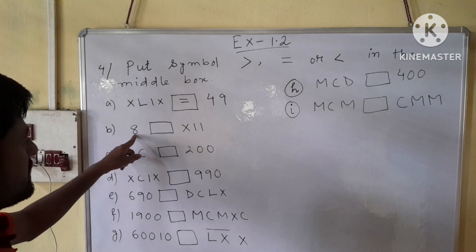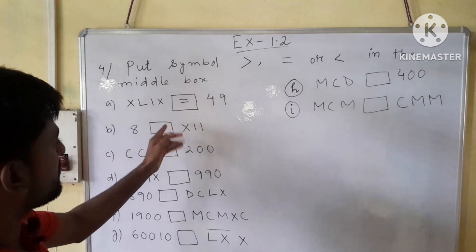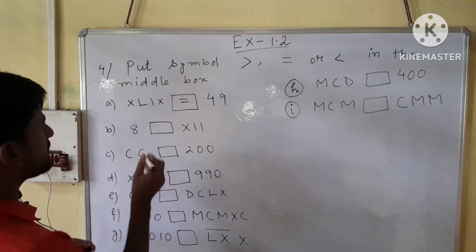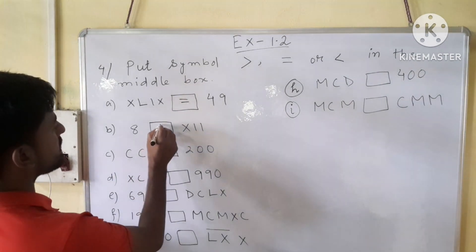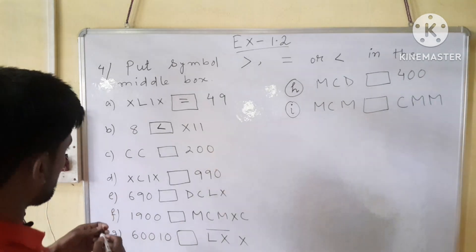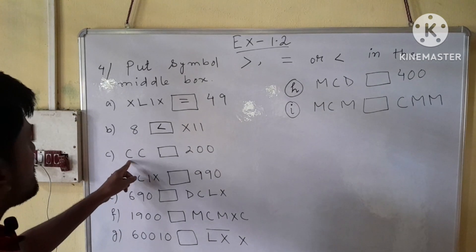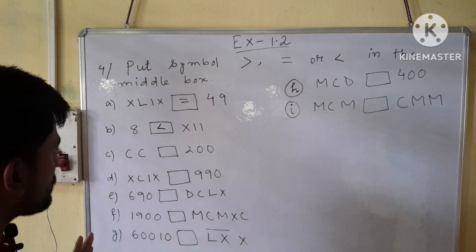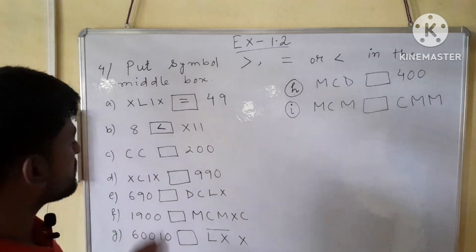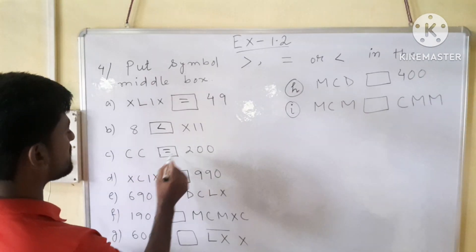Number B: here we have 8, and on the right side of the box we have 12. So it will be less than. Number C: CC means 200, and on the right side of the box we also have 200. So it will be the equal sign.